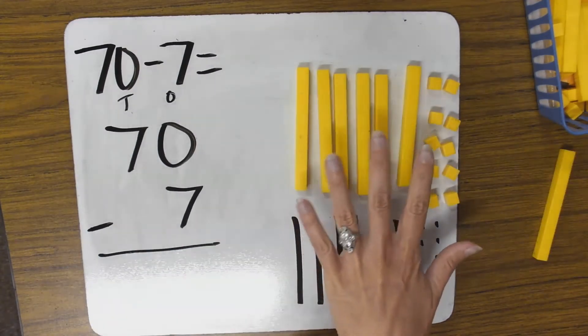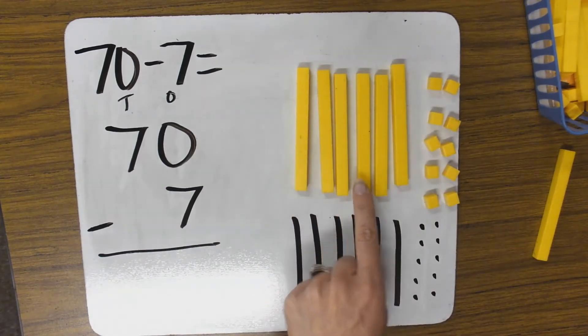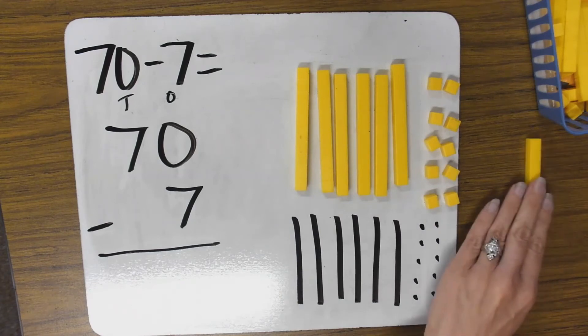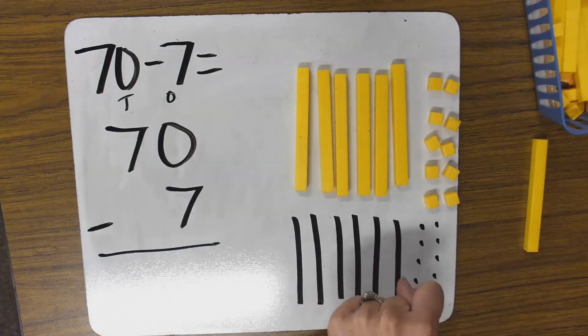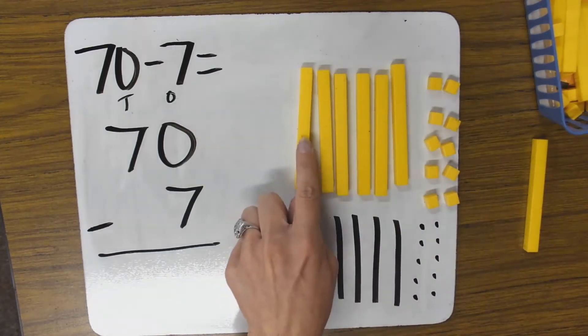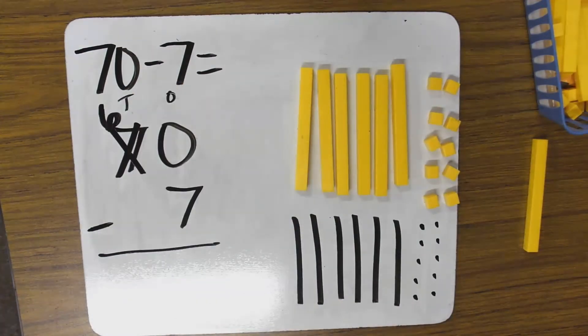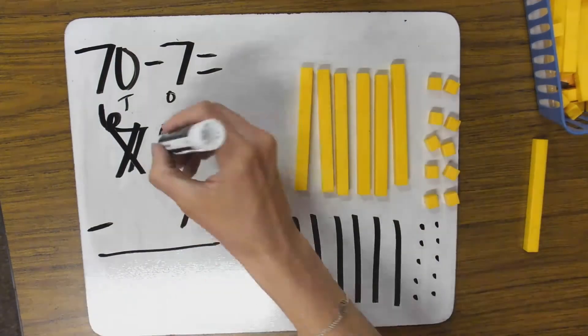Now I have regrouped with my base 10 blocks and with my picture. I traded a 10 for 10 1s. Here's my 10 off on the side and I erased. I know I said cross out for the subtraction, but when I'm trading, I want to have a cleaner picture here. So instead of 7, I have 6 10s and I have 10 1s.